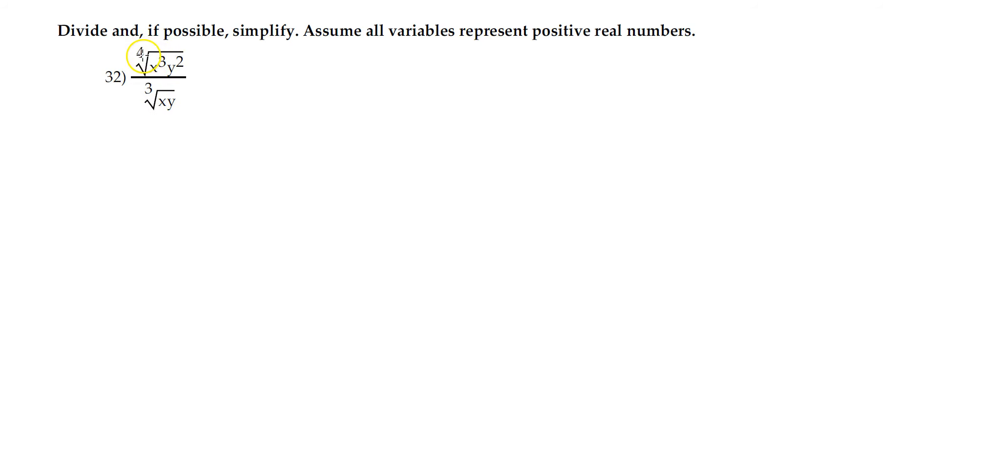We have a fourth root on the top and a cube root on the bottom. So no quotient rule. The quotient rule needs to have the same index in order to combine these. If you do not have the same index and you're multiplying or dividing radicals, you do need to go into rational exponent form or have another way to get to the same index.